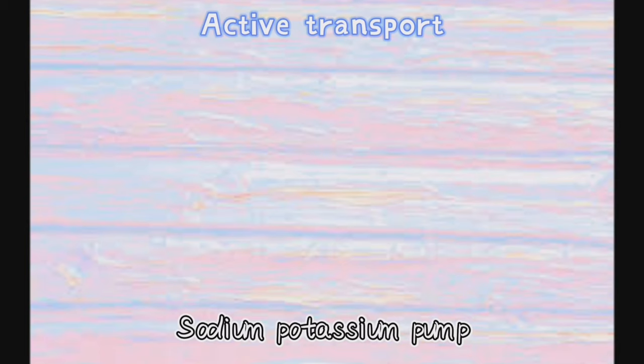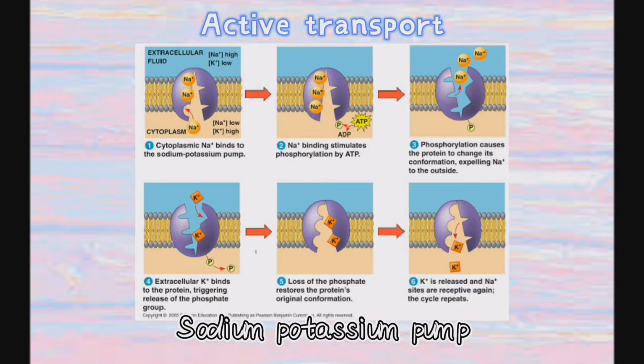Active transport requires adenosine triphosphate (ATP) released during cellular respiration. There are two types: the sodium-potassium pump and the proton pump. The sodium-potassium pump uses carrier proteins to transport sodium ions out of the cell and potassium ions into the cell. ATP decomposes into ADP and phosphate, which provides energy to change the shape of the carrier protein and transport sodium out; when potassium binds from outside, the phosphate is released, the protein returns to its original shape, and potassium is transported into the cell.